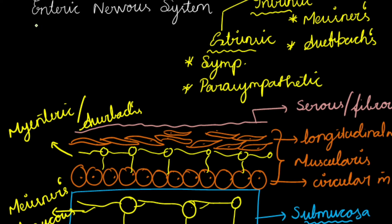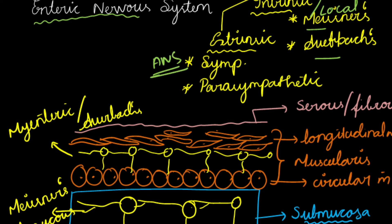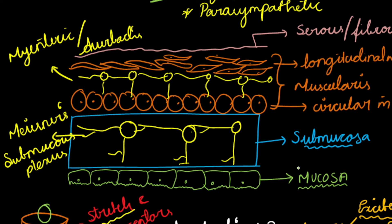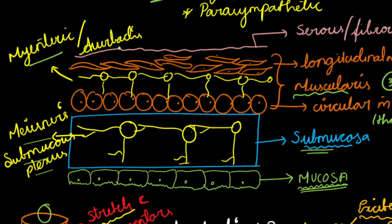Quick recap: The enteric nervous system has both intrinsic and extrinsic nerve supply. The intrinsic, also called local response, includes Meissner's and Auerbach's plexuses. The extrinsic is the autonomic nervous system — both sympathetic and parasympathetic. The innermost layer is the mucosal layer, then the submucosal layer with Meissner's submucosal nerve plexus, then the muscularis layer with circular and longitudinal muscle folds, and in between these we have the myenteric (Auerbach's) nerve plexus. The outermost layer is the serous or fibrous layer.